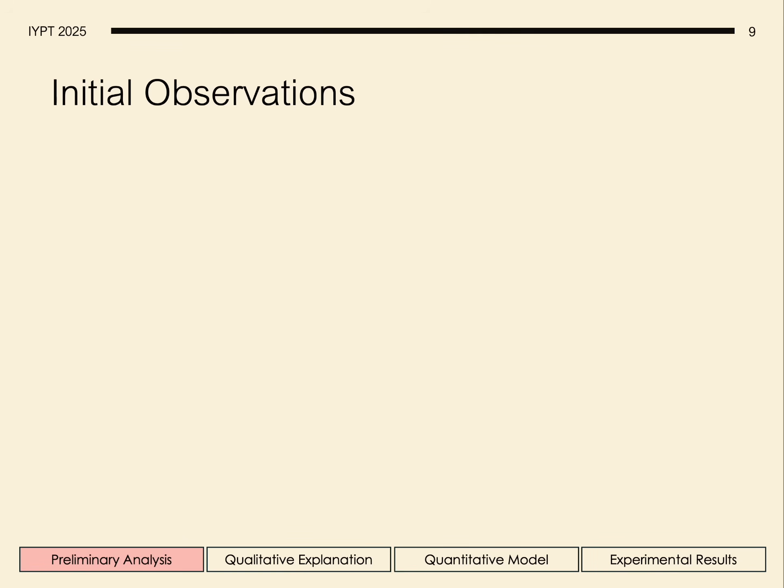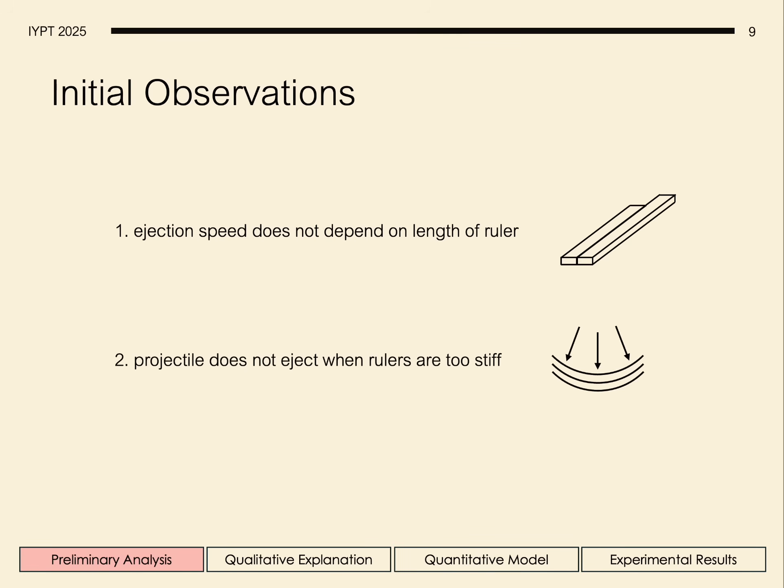We observe two important things. Firstly, the ejection speed, contrary to intuition, doesn't actually increase when we increase the ruler length. Secondly, there are scenarios where the ball doesn't actually eject at all, because the rulers are too stiff. And we'll investigate why each case is true in our theoretical analysis.